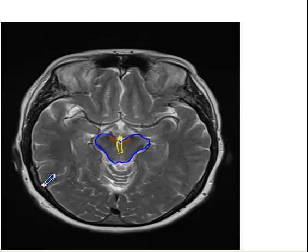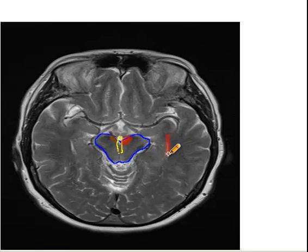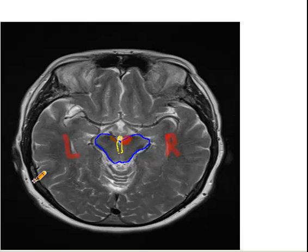Now let's say that this person has a stroke affecting the anterior part — I will draw the stroke here. This is the right side and this is the left side; the stroke is on the right side. So you will have a right third nerve palsy and a left hemiparesis. This is all there is to Weber syndrome. I hope you enjoyed the talk.